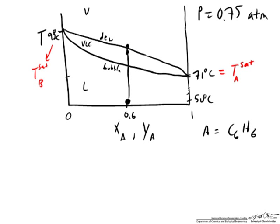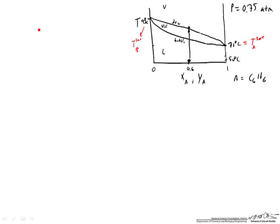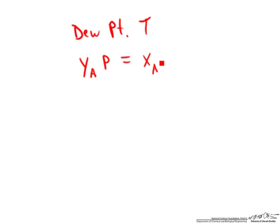We'll just take advantage of Raoult's law here, which applies for our ideal gas, ideal solution conditions in our phase equilibrium problem. And so we can write down Raoult's law for our dew point calculation. That will be YA times P is equal to the mole fraction in the liquid phase times the saturation pressure at the dew point temperature.